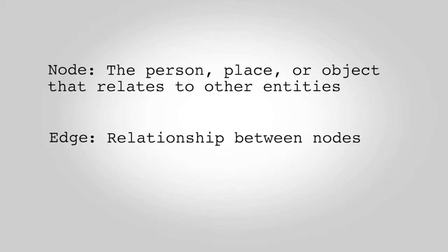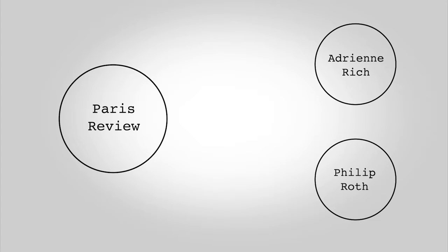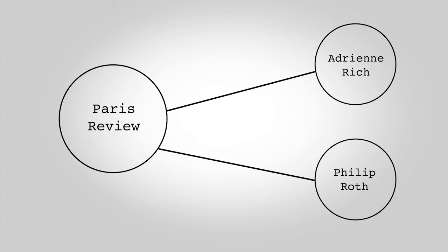In a network of authors and publications, a node might be the Paris Review. If the edges denote publishing, then an edge would connect the Paris Review node to authors like Adrienne Rich and Philip Roth, who would be connected with other edges to yet other publication nodes.